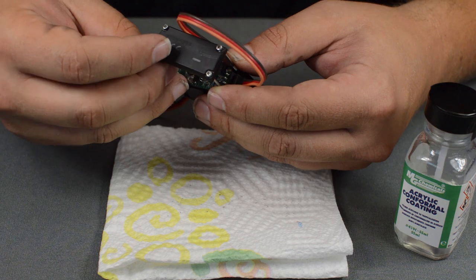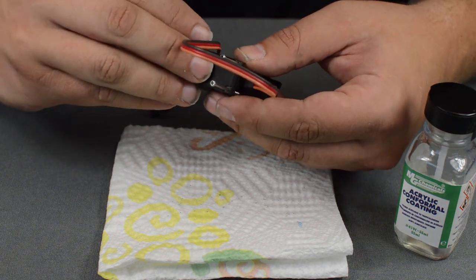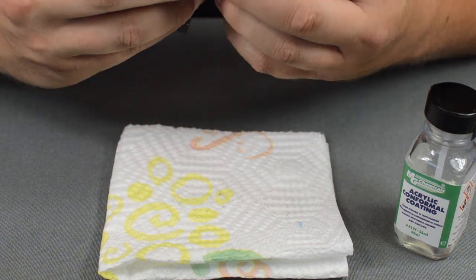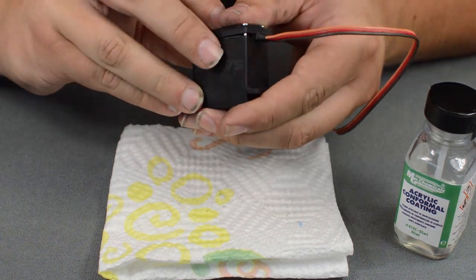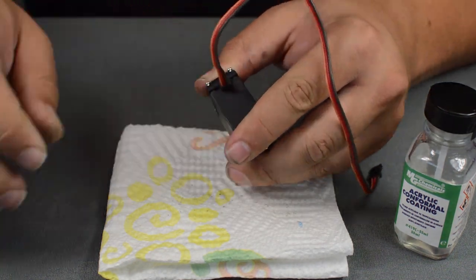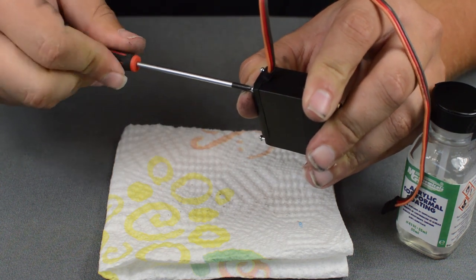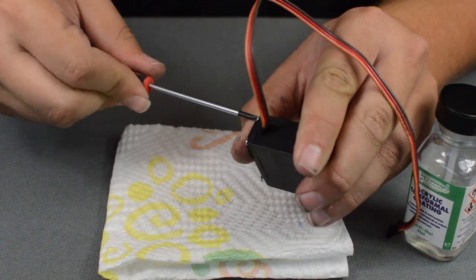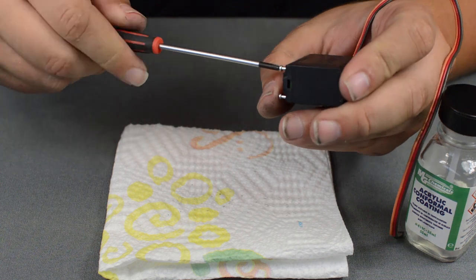And what some people do is they will take and put the dielectric grease actually in between the seams. It's a little bit extra protection to the elements. But the conformal coating normally does its job and seals up all the circuits good.